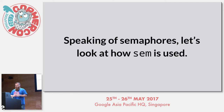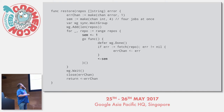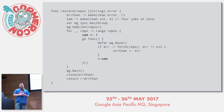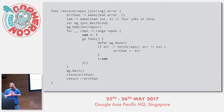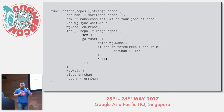Speaking of semaphores, let's look more closely at how sem is used. The role of sem is to make sure that at any one time, there's a cap on the number of fetch operations running — we don't want to start them all at once, we want to gate them. But if you look closely, sem isn't actually guaranteeing that there are no more than four fetch operations running. It's doing something else.